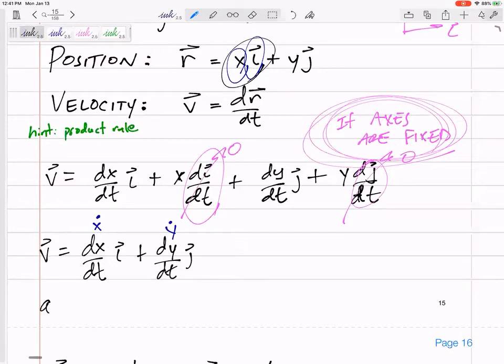And we could do this again. The acceleration would be the d squared X/dt squared in the i, d squared Y/dt squared in the j.